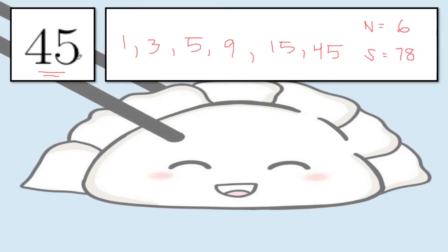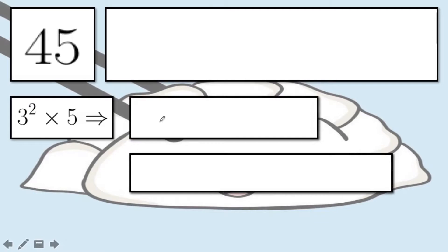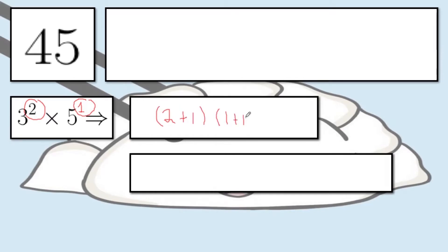Now let's use the prime factorization method to verify whether 6 and 78 are correct. We first get the prime factorization of 45. We know 45 is 9 times 5. 9 is 3 squared and we have a 5. So the prime factorization of 45 is 3 squared times 5. For the number of positive integer divisors, we take the exponents: 2 and 1. We add 1 to both: (2 plus 1) times (1 plus 1). That gives 3 times 2, which is 6. So the value of 6 that we got is correct.